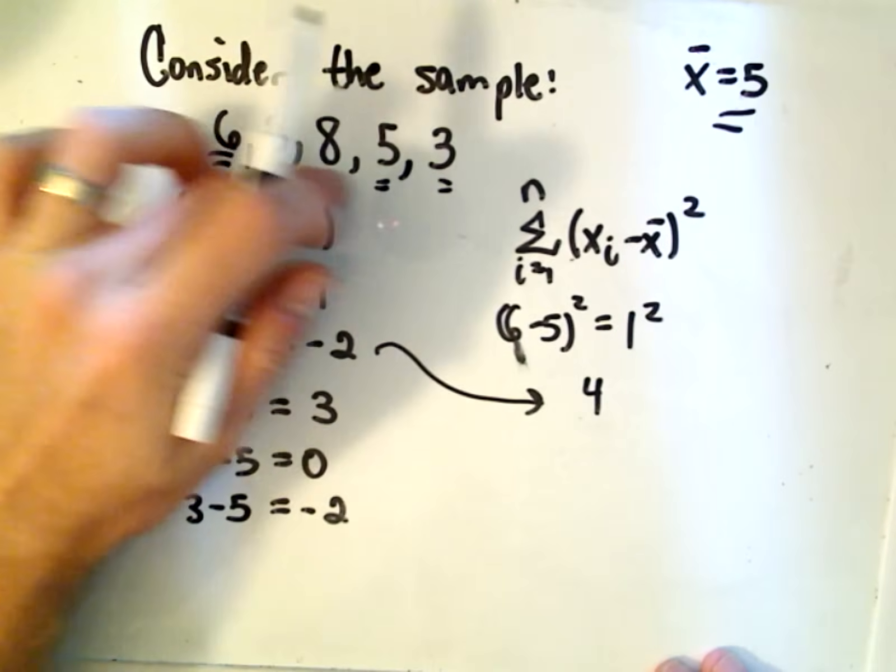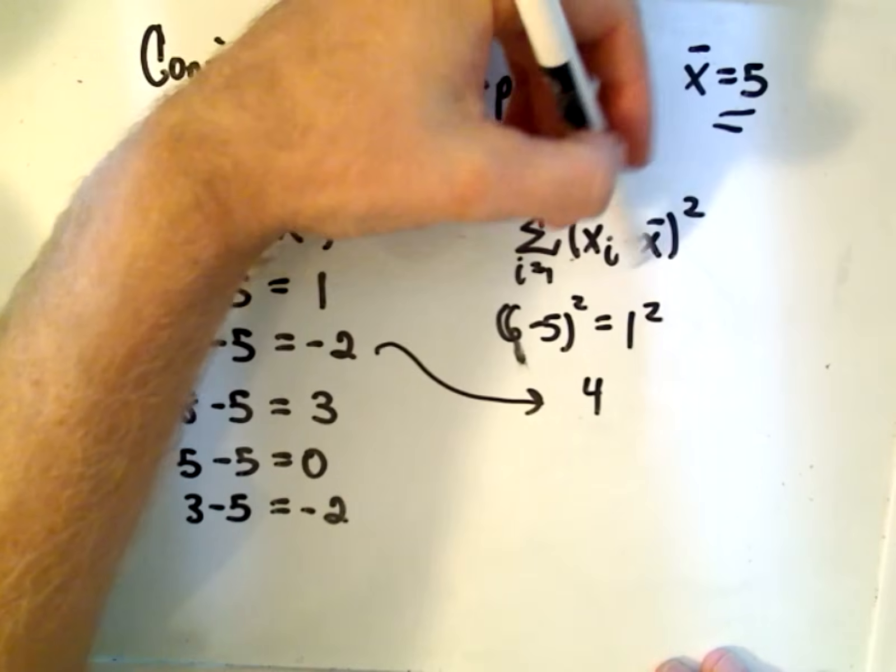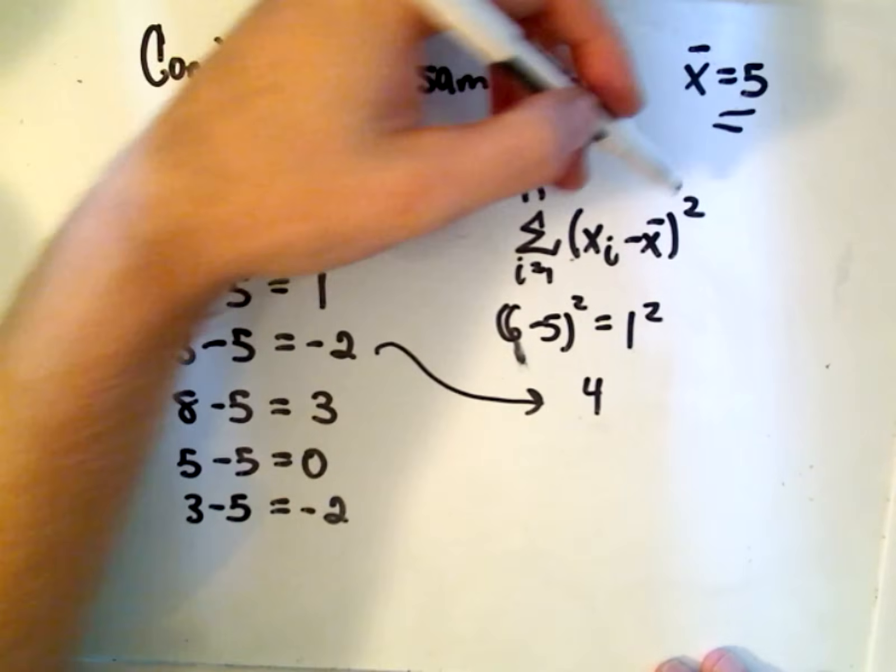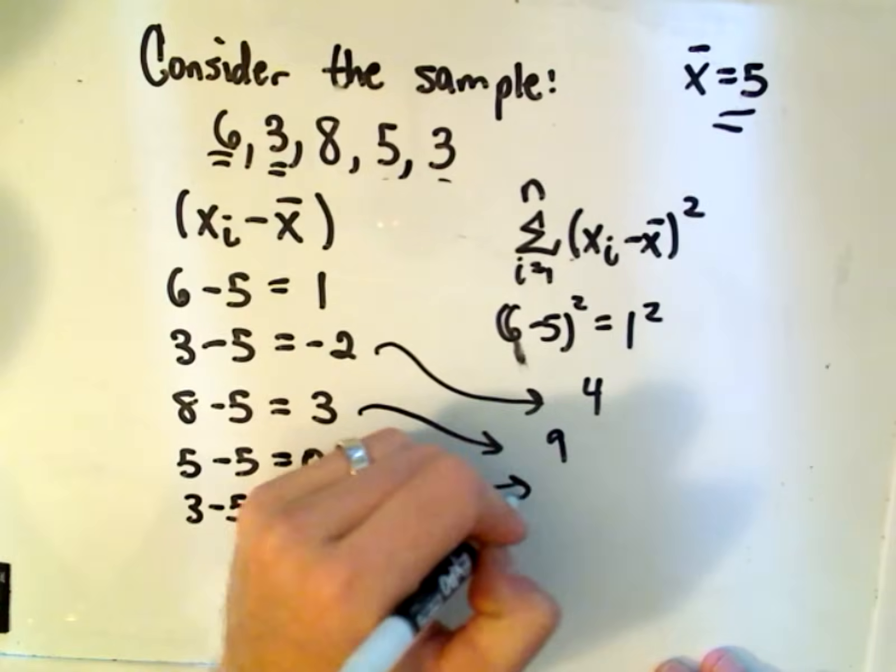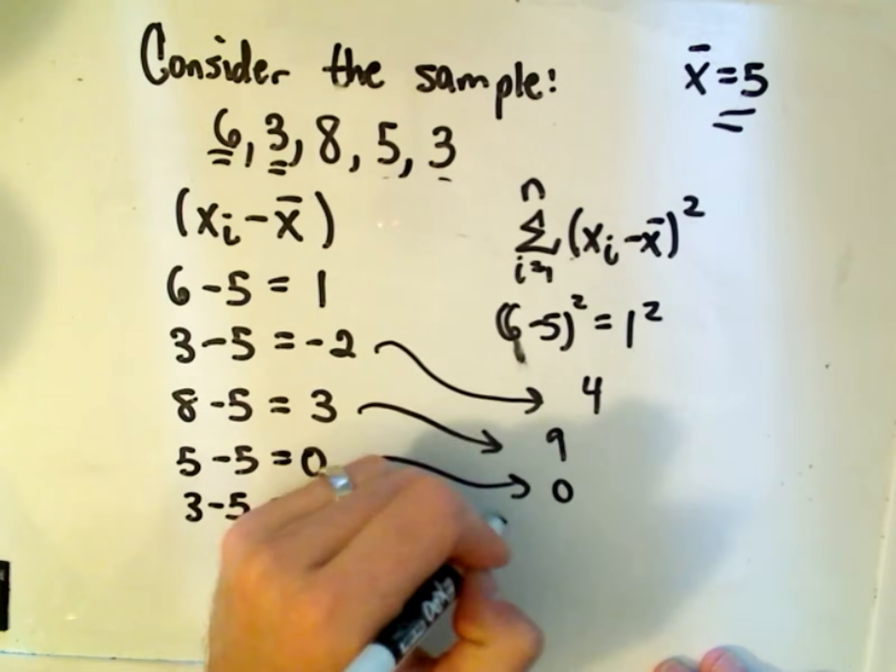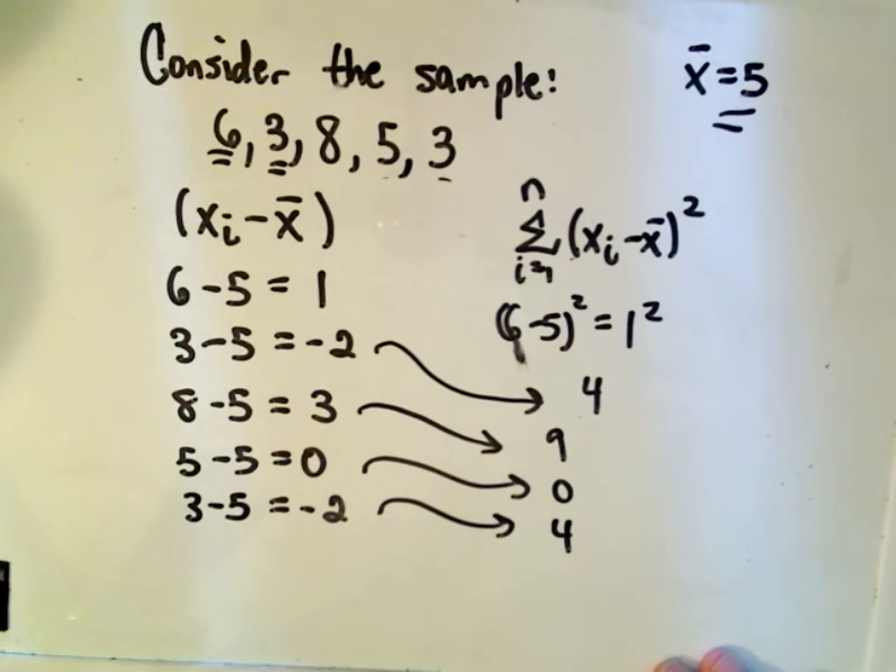So again, all I'm doing is I'm taking every number that I calculated before and squaring it. If I square 3, I'll get 9. If I square 0, I get 0. If I square negative 2, I get positive 4.